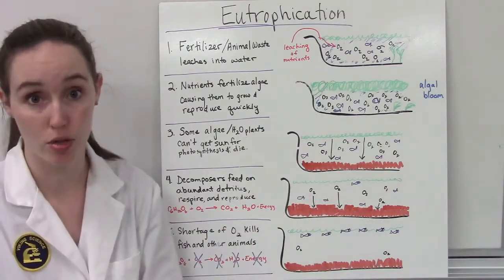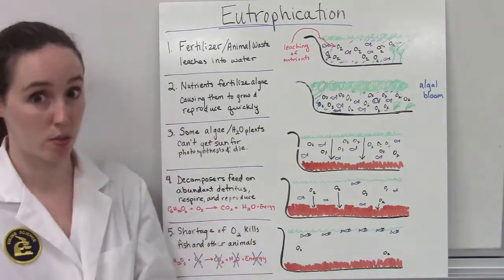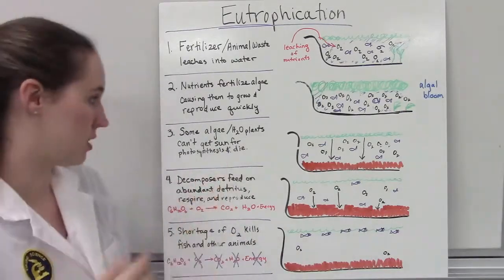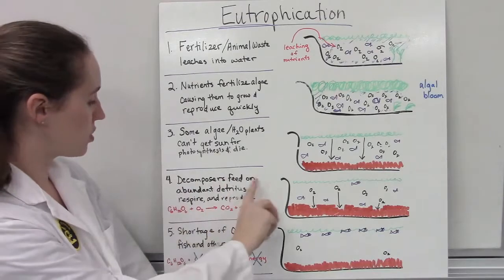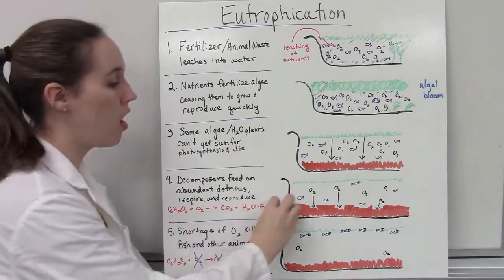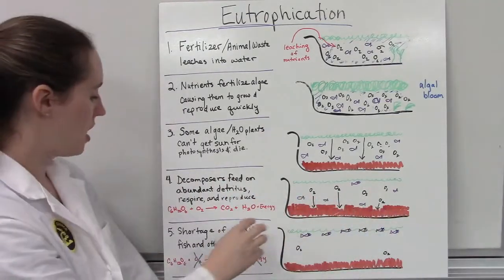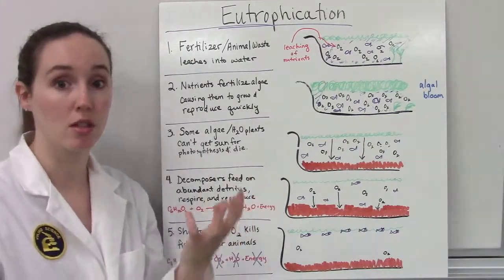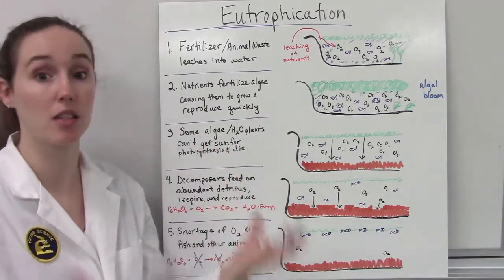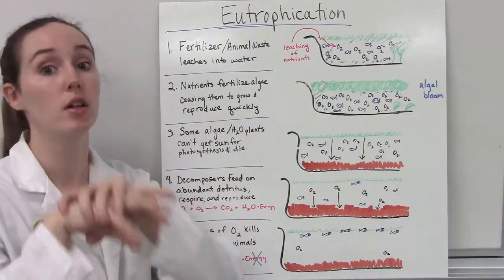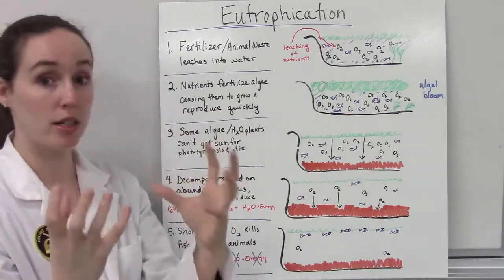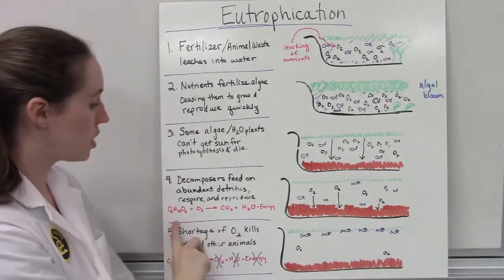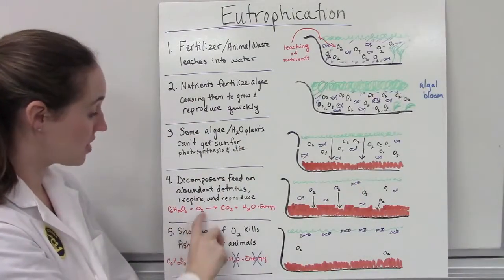Now all decomposers feed and they respire, and they need the same kinds of things that all living things need. The decomposers are going to feed on all of this detritus and they are going to reproduce because they have plenty of nutrients. And like all living things, they respire in order to break down the energy from their food — from glucose — and make it into ATP.